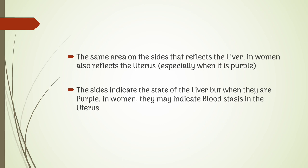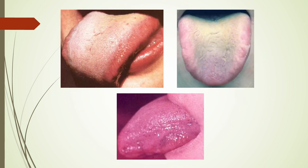The same area on the sides that reflects the liver in women also reflects the uterus, especially when it is purple. The sides indicate the state of the liver, but when they are purple in women, they may indicate blood stasis in the uterus. Here you can see examples of tongue images.